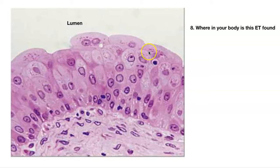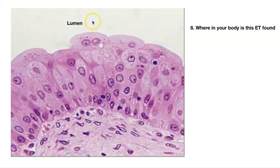Number eight — where do you find this in your body? This is transitional epithelium. Look at those apical cells — weird-looking cells. It's stratified, but the apical cells tell you what it is. Transitional epithelium is found in your bladder and ureters, which carry urine into your bladder. When the bladder fills with urine, it pushes down on those apical cells, making them flat — so the big balloon cells transition into flat cells. That's why it's called transitional.